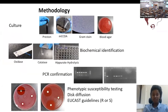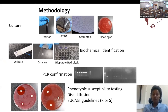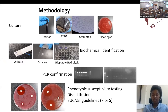To identify Campylobacter we carried out culture in the lab, we also ran some biochemical identifications and further confirmed the isolates using PCR. For the confirmed isolates we carried out some phenotypic susceptibility testing using disk diffusion and used EUCAST guidelines for the interpretation on whether resistance or susceptibility.